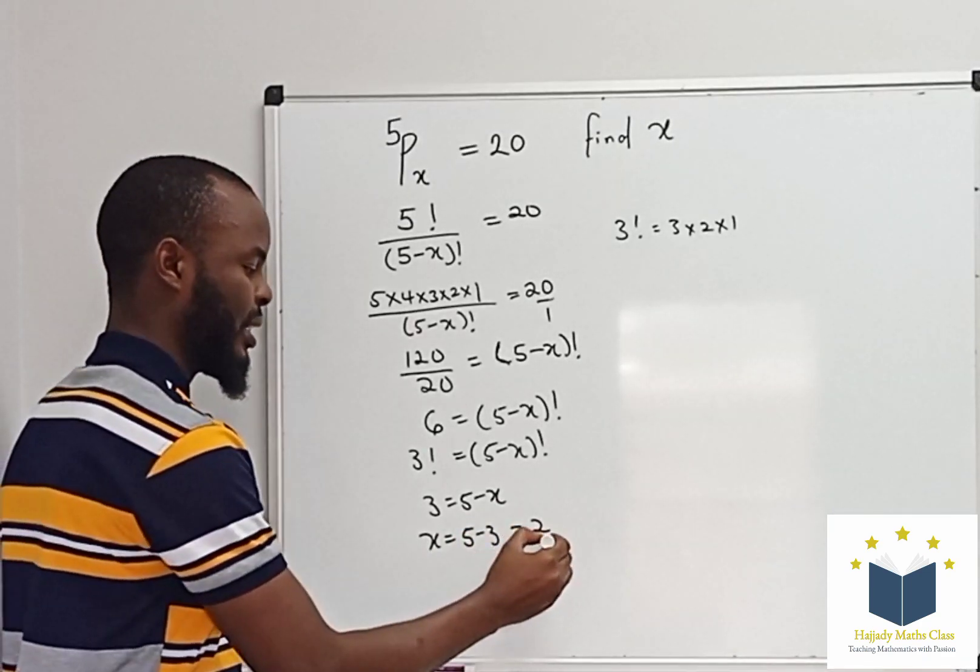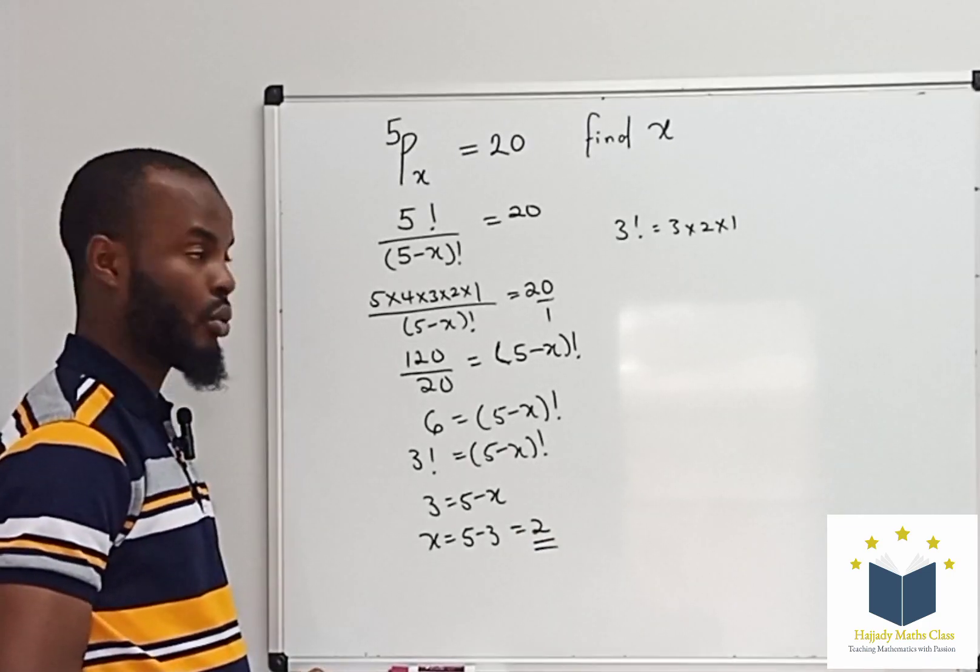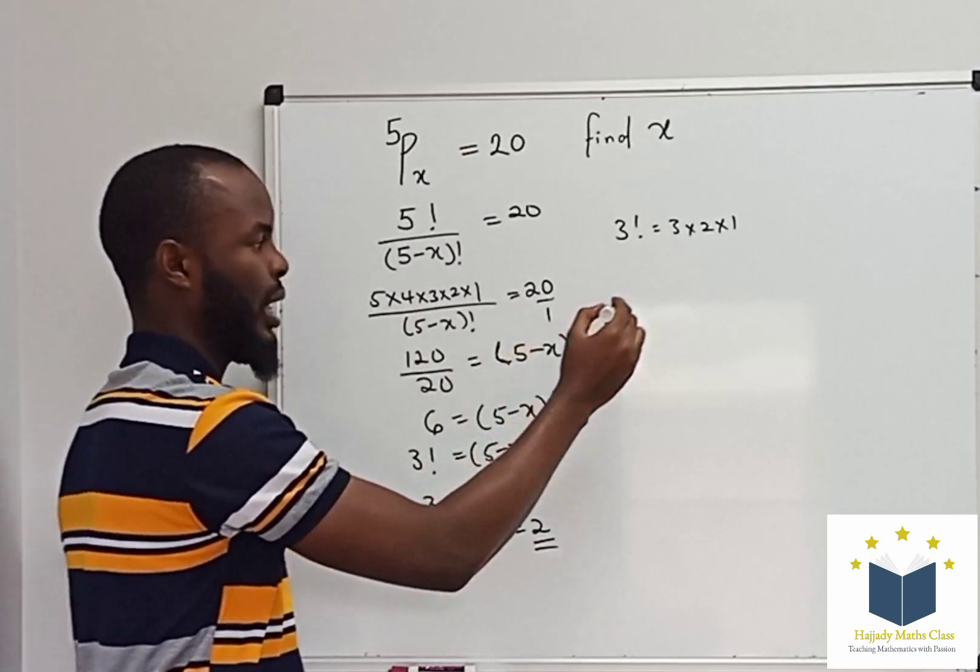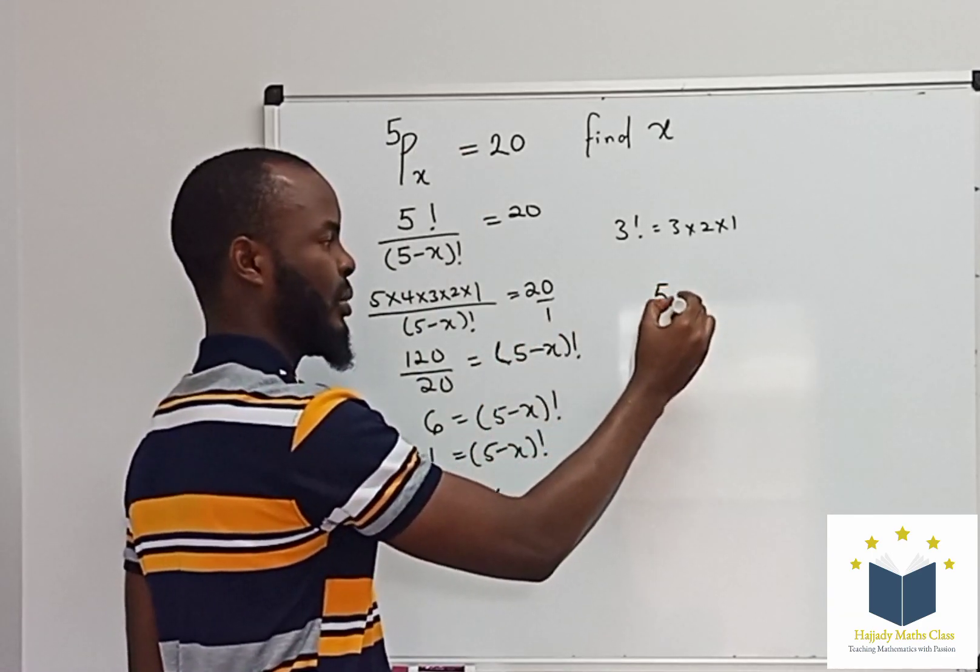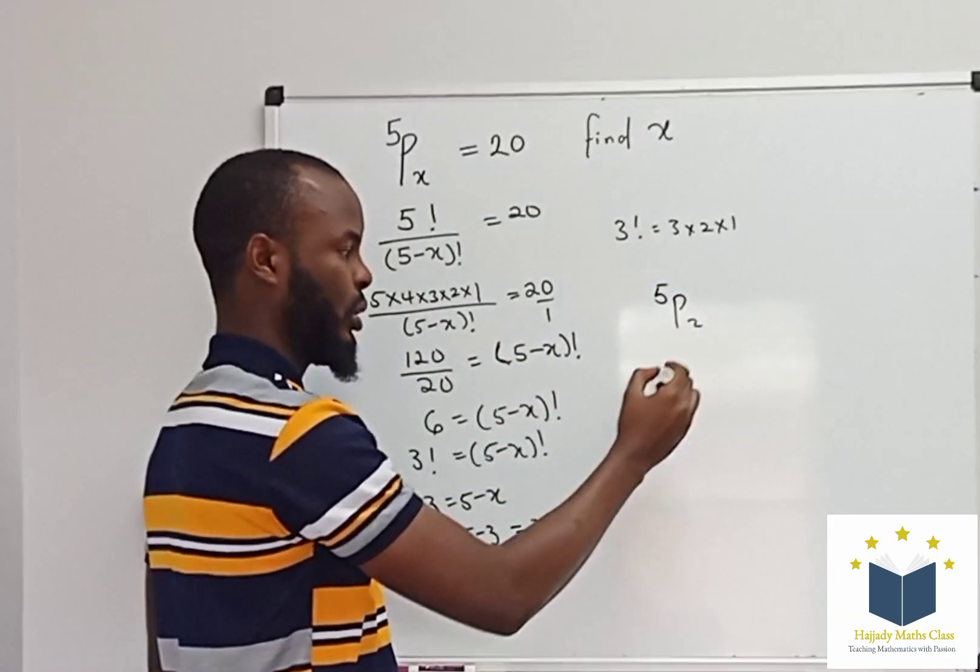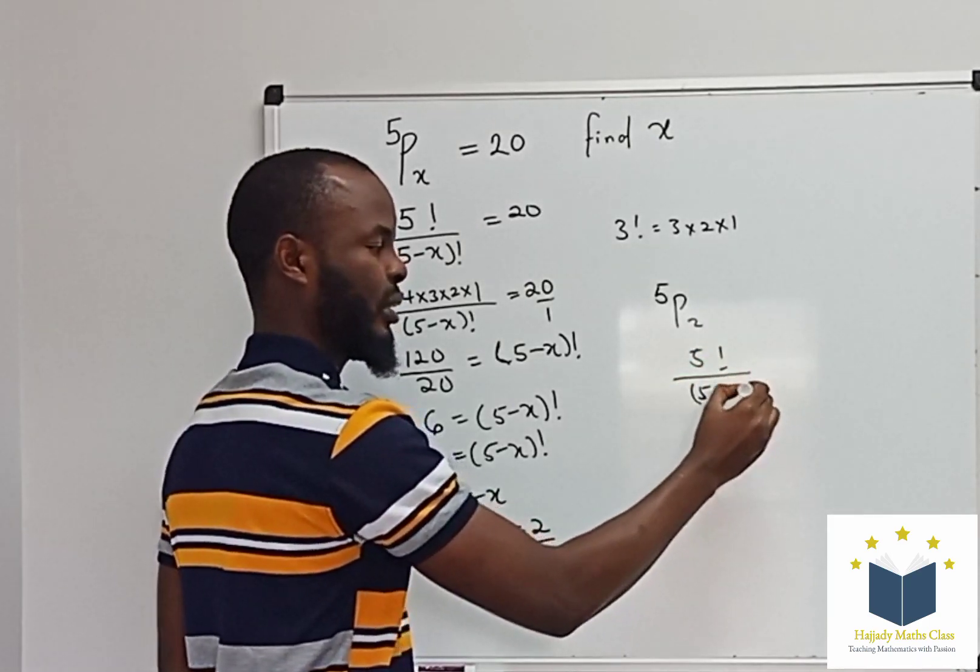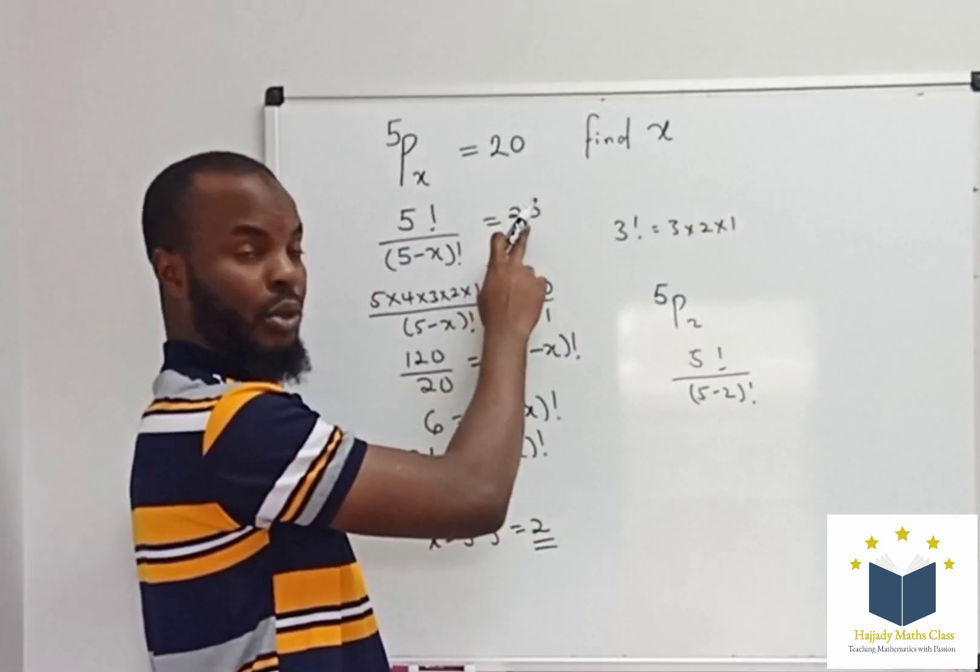This is the final answer. Now, to confirm if this is true, you can plug in the value of x into this, where you have 5 permutation 2. It's going to be 5 factorial over 5 minus 2 factorial. We want to see if it's going to be 20.